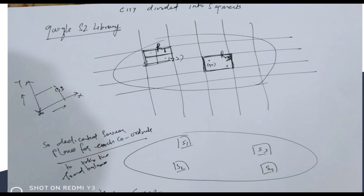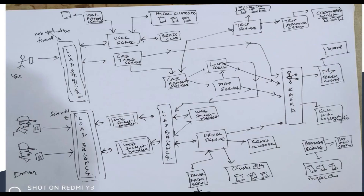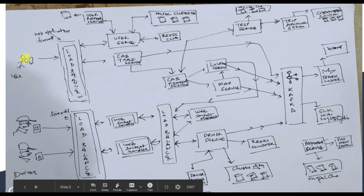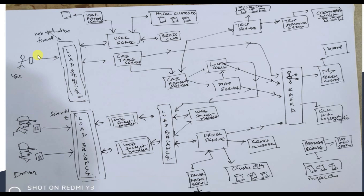Let's move to the last design — a bit complicated, but I'll explain it from the beginning. There is a user with an app and drivers. The user places a request which routes to the load balancer. The load balancer runs on a server with security enabled — a Web Application Firewall — to prevent hacker intrusions. The user request goes to the load balancer and then back from server to load balancer, making it a two-way communication.